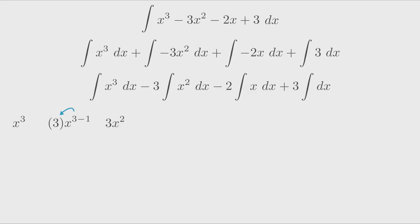Remember that we want to reverse this process in order to take the integral. Well, let's do that. Instead of subtracting 1 from the exponent, we'll add 1. Then, instead of multiplying the coefficient by the exponent, we'll divide the coefficient by the exponent. As you can see, we get an integral of ¼x⁴.